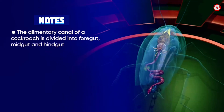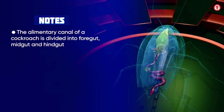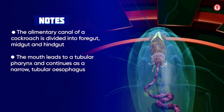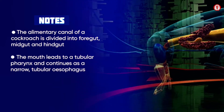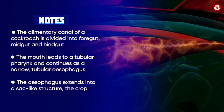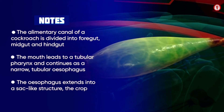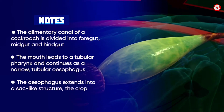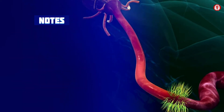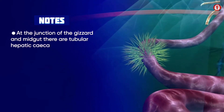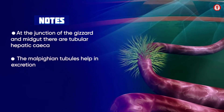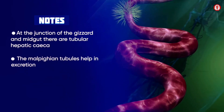In summary, the alimentary canal of a cockroach is divided into foregut, midgut, and hindgut. The mouth leads to a tubular pharynx and continues as a narrow tubular esophagus, which extends into the crop. At the junction of the gizzard and midgut there are tubular hepatic caeca, and the Malpighian tubules help in excretion.